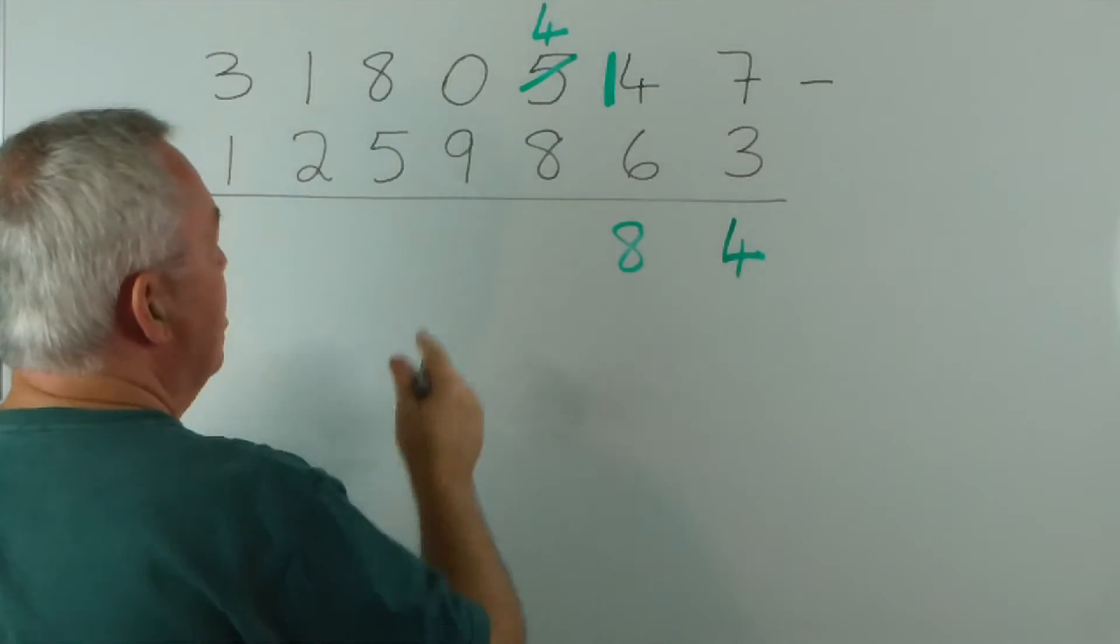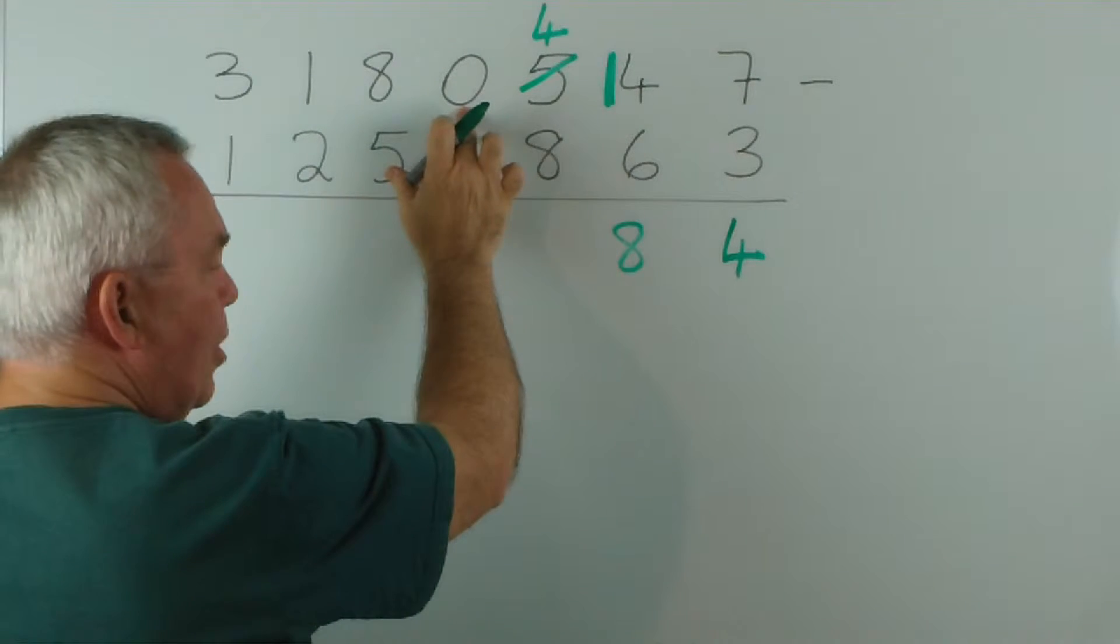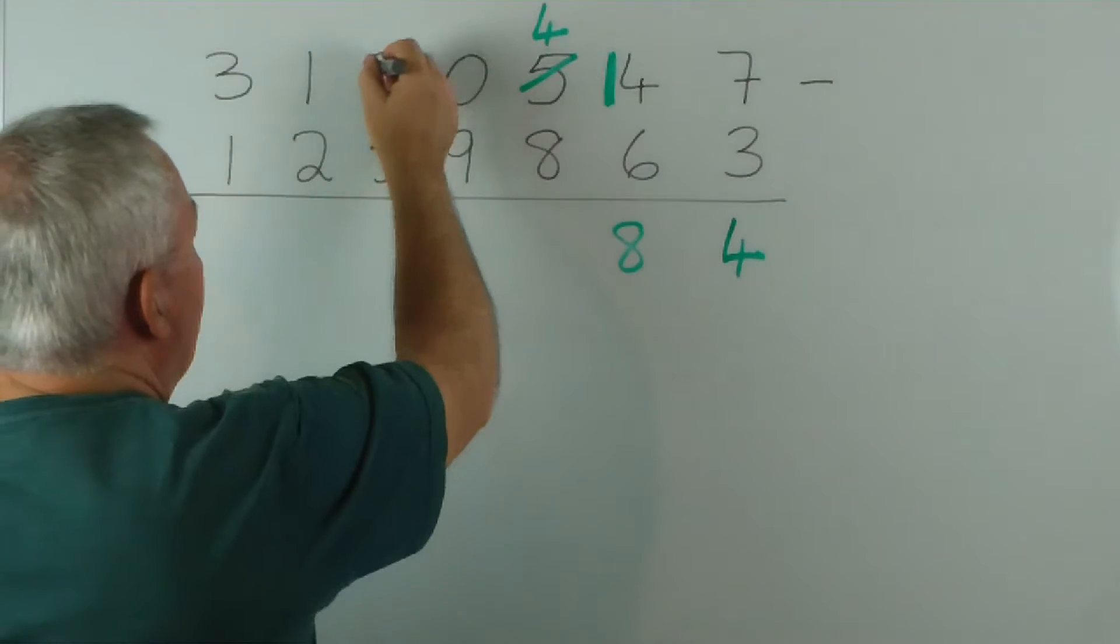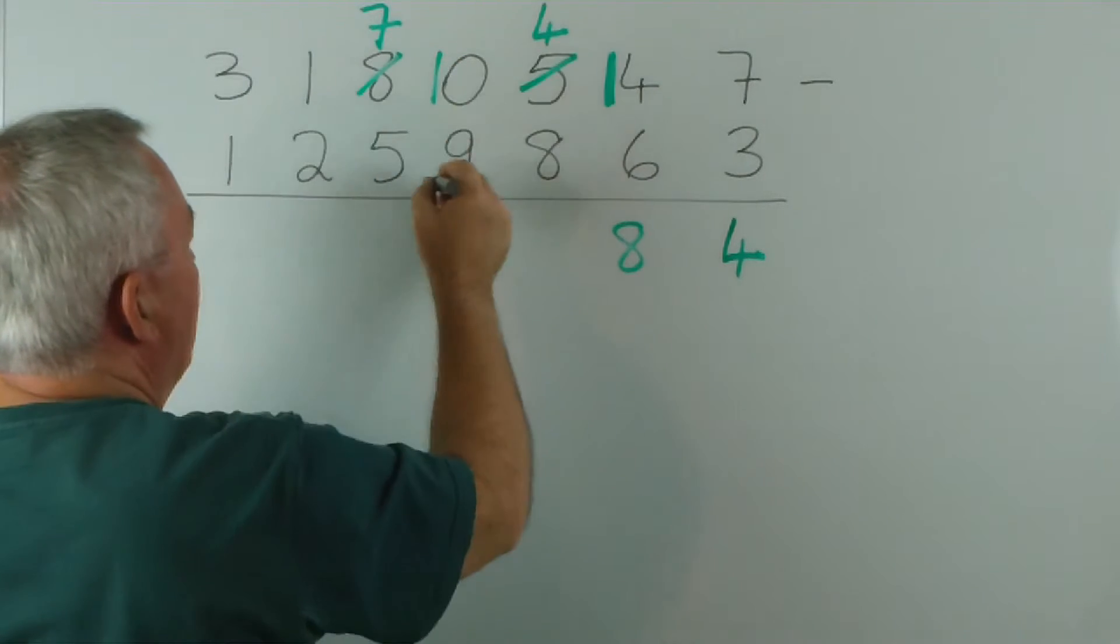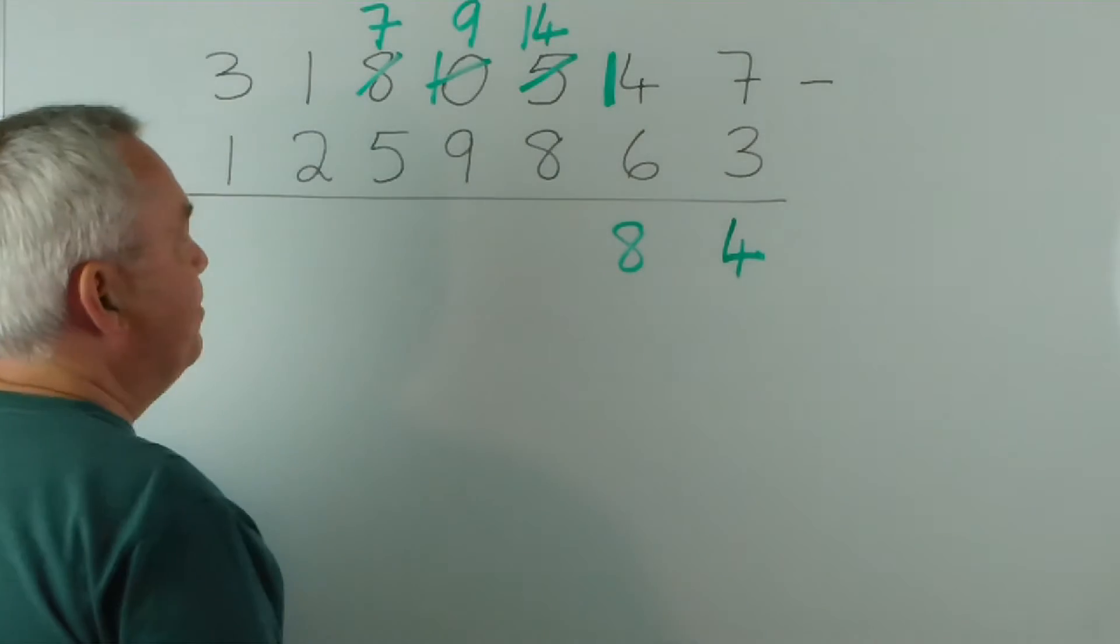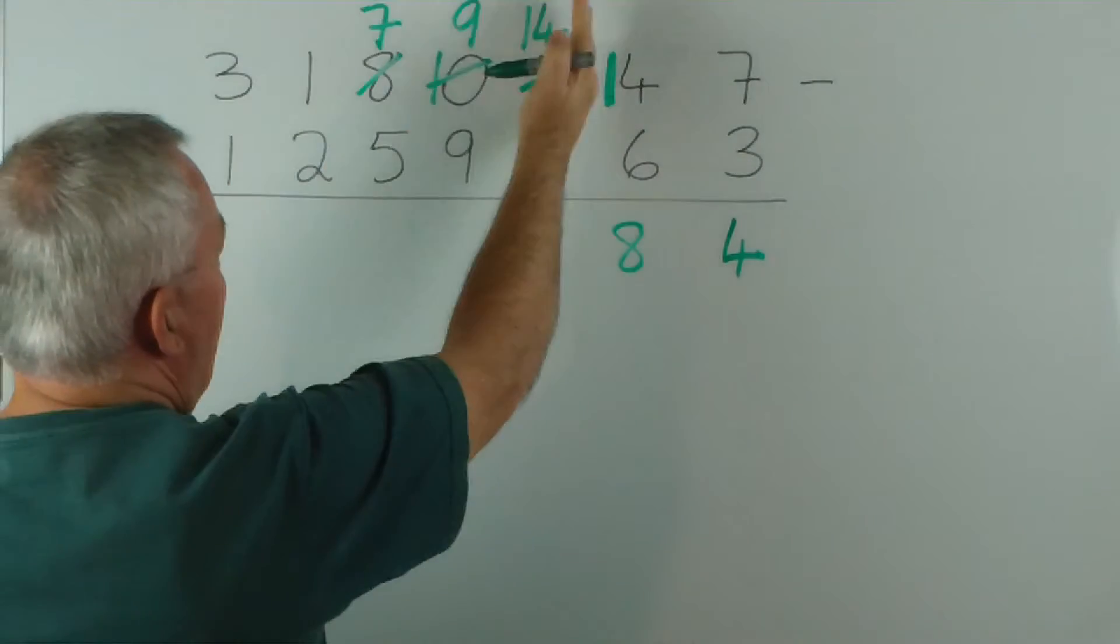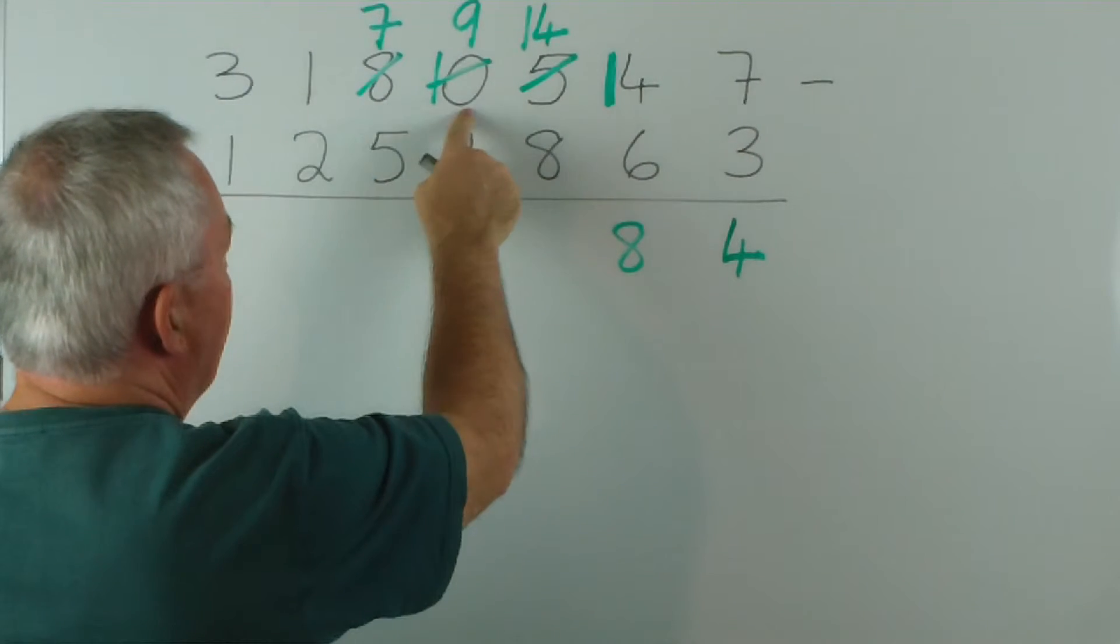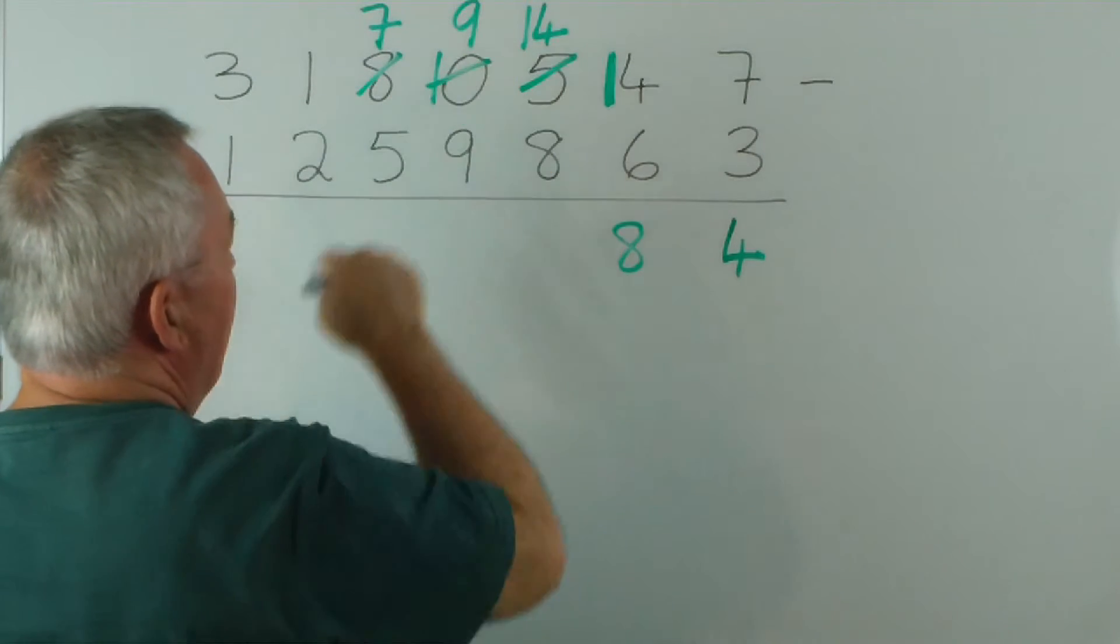Eight from four we can't do, so we borrow. Now, interestingly, there's nothing to borrow from, so we have to go further afield. We borrow from the eight, and we bring it across, and we borrow from the ten, and we bring that across. So, it had to sort of shuffle down. Another way of thinking is you reduce the eighty, the eight zero, to seventy-nine, and bring that one bundle of ten across.